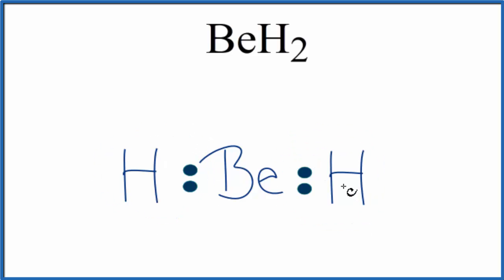So we have a Lewis structure, and we can imagine that these hydrogen atoms here on the ends are pushing away from each other as much as they can. And that's going to give us a linear molecular geometry. And our bond angle will be 180 degrees.